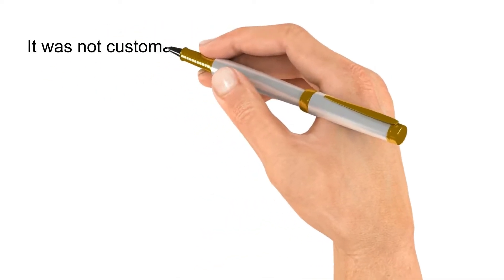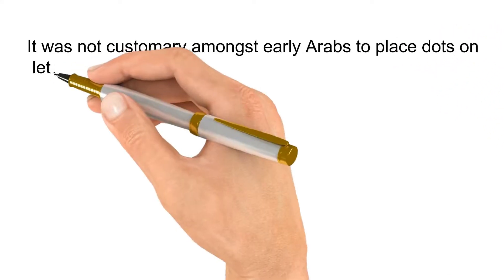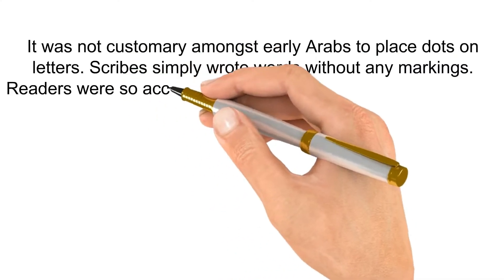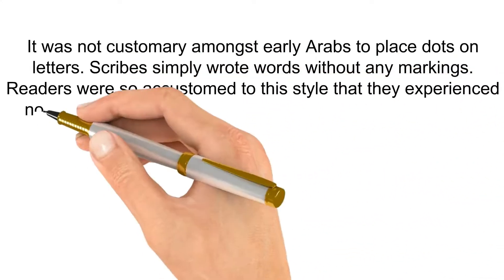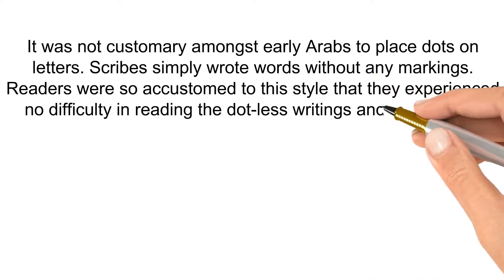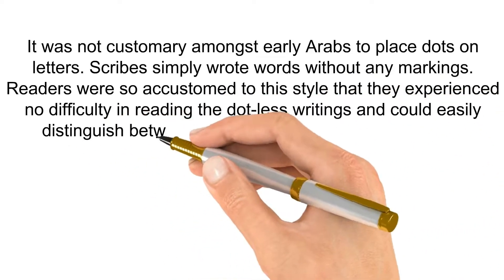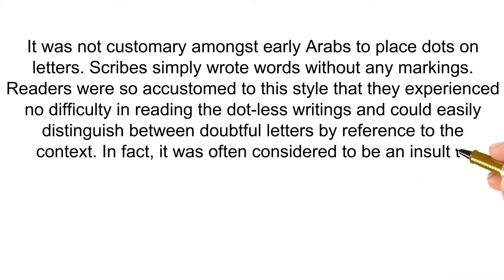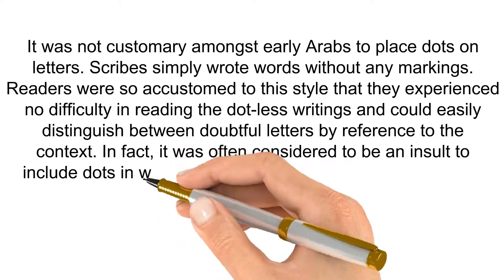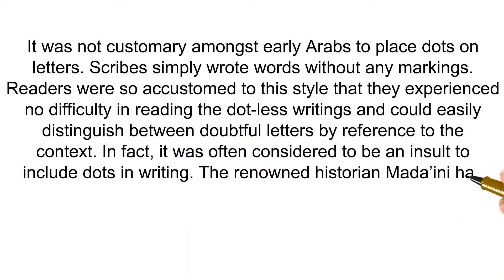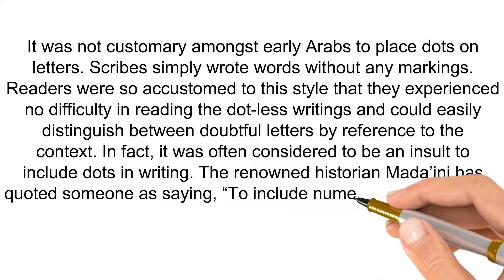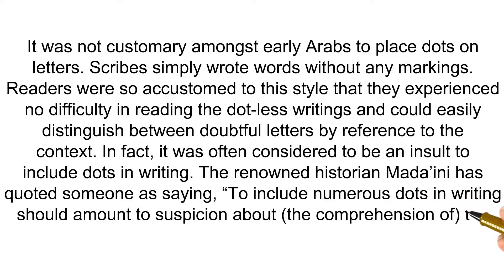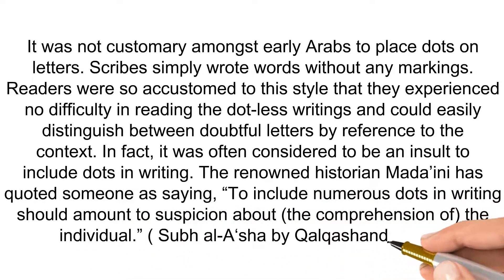It was not customary amongst early Arabs to place dots on letters. Scribes simply wrote words without any markings. Readers were so accustomed to this style that they experienced no difficulty in reading the dotless writing, and could easily distinguish between doubtful letters by reference to the context. In fact, it was often considered to be an insult to include dots in writing. The renowned historian Madaini has quoted someone as saying, 'To include numerous dots in writing should amount to suspicion about the comprehension of the individual.'